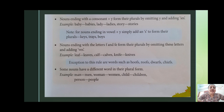Nouns ending with a consonant plus Y form their plurals by omitting Y and adding IES. For example, baby → babies, lady → ladies, story → stories.